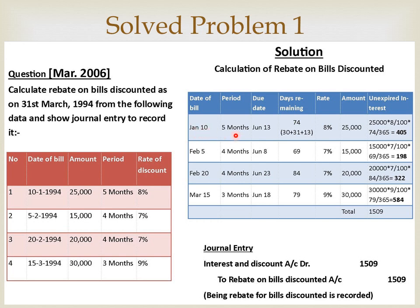For the first bill, January 10 is the issue date with a five-month maturity. To find the due date, add five months to January 10: February, March, April, May, June — plus 10, plus three days grace period, so June 13 is the expiry date. Days remaining after the close of the financial year, that is after March 31st: April (30 days), May (31 days), June (13 days) — 30 plus 31 plus 13 = 74 days. The face value is Rs. 25,000 at 8% discount rate. The unexpired interest is 25,000 × 8/100 × 74/365 = Rs. 405. This amount is not relating to the current accounting period — it relates to the next accounting period, so this amount is to be deducted from the interest income in the profit and loss account.